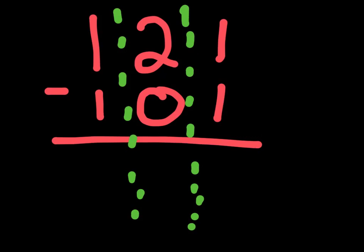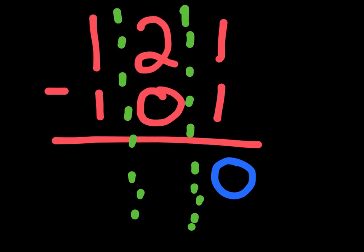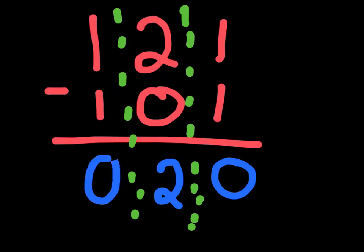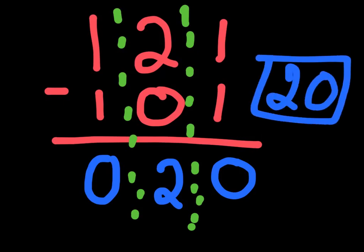What we usually do is subtract just the right hand column first. When we subtract the right hand column we get zero. Then we subtract the middle column — two minus zero — we get two. Then we do the left hand column: one minus one is zero. So our answer to 121 minus 101 is 20. Fairly simple — let's go on to another question.